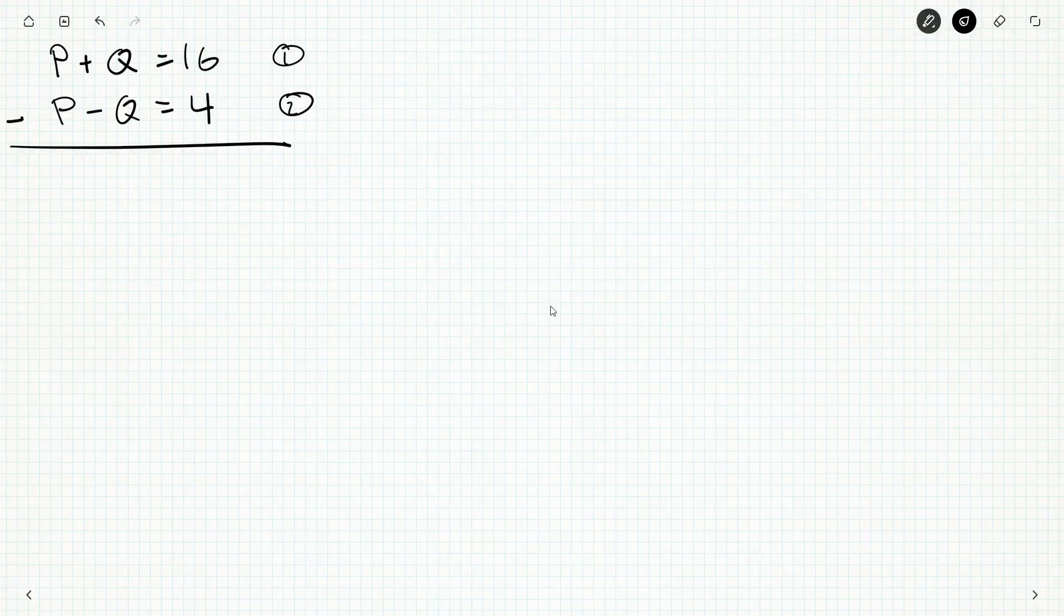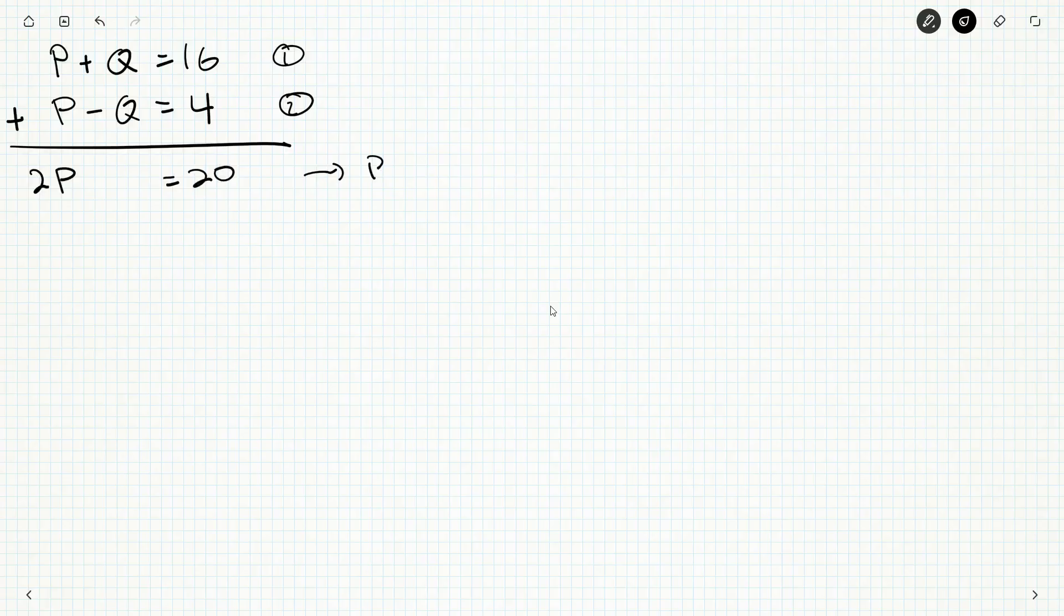Okay, and so this is sort of the classy way to do it. P plus P is 2P plus P plus minus Q is no Qs at all. They cancel out. 16 plus 4 is 20. And from there, we get P is equal to 10 divided by 2 on both sides.